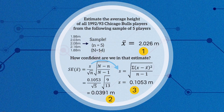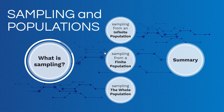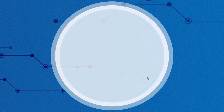The standard error here — 0.0391 — is a bit less than in the previous example. That's no surprise, because we have proportionately more information about the population. After all, the population is only 14 people.